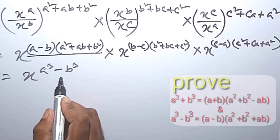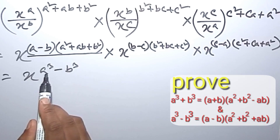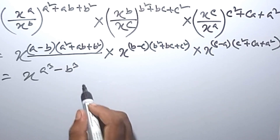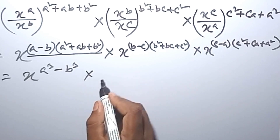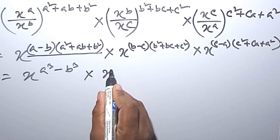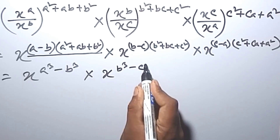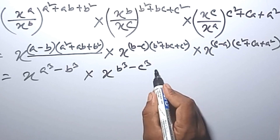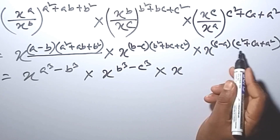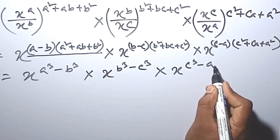See my previous video — I show how this means a cubed minus b cubed. Similarly, this gives b cubed minus c cubed, and this gives c cubed minus a cubed.